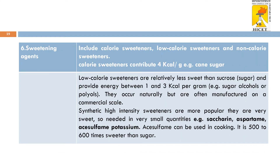Sweetening agents include calorie sweeteners, low-calorie sweeteners, and non-calorie sweeteners. Calorie sweeteners contribute up to 4 kilocalories per gram — an example is cane sugar. Low-calorie sweeteners are relatively less sweet than sucrose and provide energy between 1 and 3 kilocalories per gram; common examples include sugar alcohols or polyols, which are naturally manufactured on a commercial scale. Synthetic high-intensity sweeteners are very sweet and needed in very small quantities — examples include saccharin and aspartame, which can be up to 500 to 600 times sweeter than sugar.